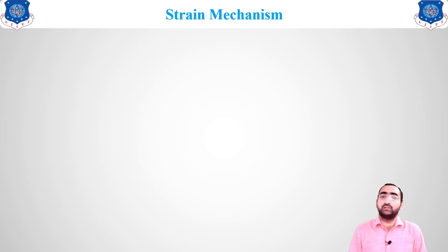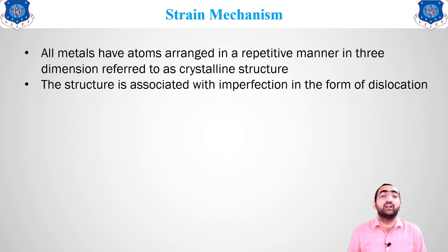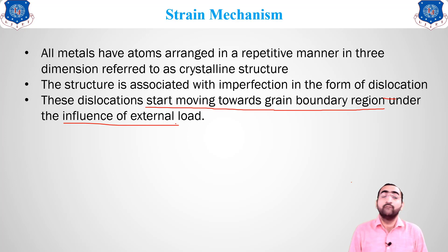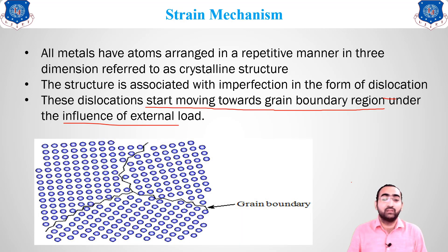One simple mechanism we study is the strain hardening mechanism. All metals have atoms arranged repetitively in three dimensions forming a crystal with a unit cell. The structure is associated with imperfections in the form of dislocations. Under the influence of an external load, dislocations start moving towards the grain boundaries — similar to an edge dislocation moving forward.